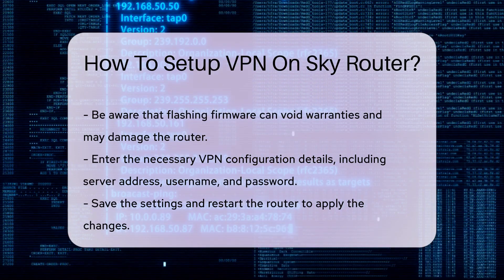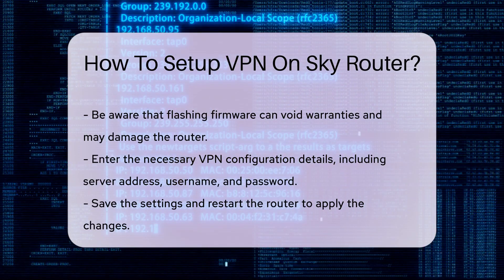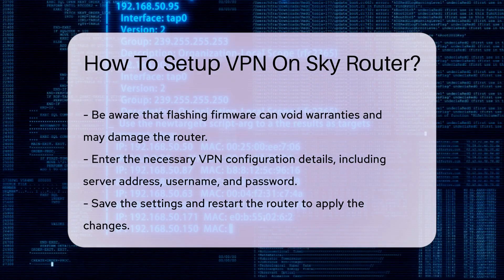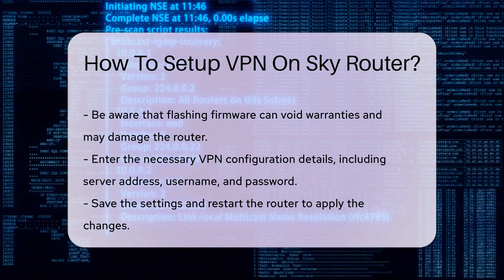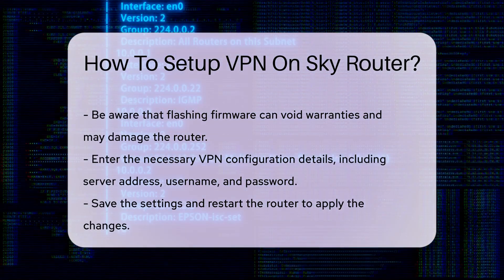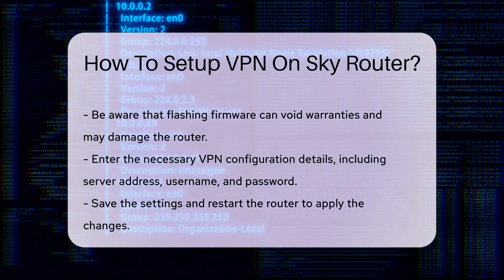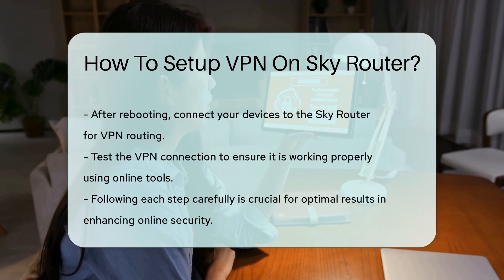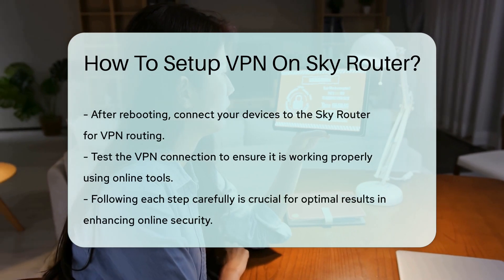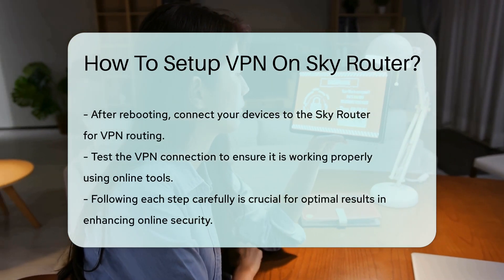Save the settings and restart the router to apply changes. Once the router reboots, connect your devices to the SkyRouter. They should now be routed through the VPN, enhancing your security.